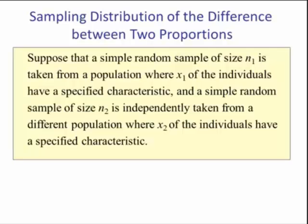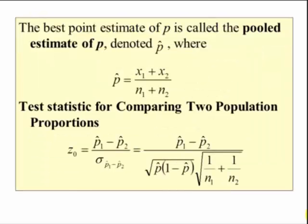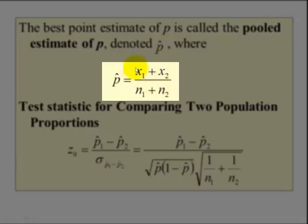The best point estimate of p is called the pooled estimate of p, denoted p-hat, where p-hat is the sum of the x's, the characteristic that we want, divided by the sum of the two different sample sizes.